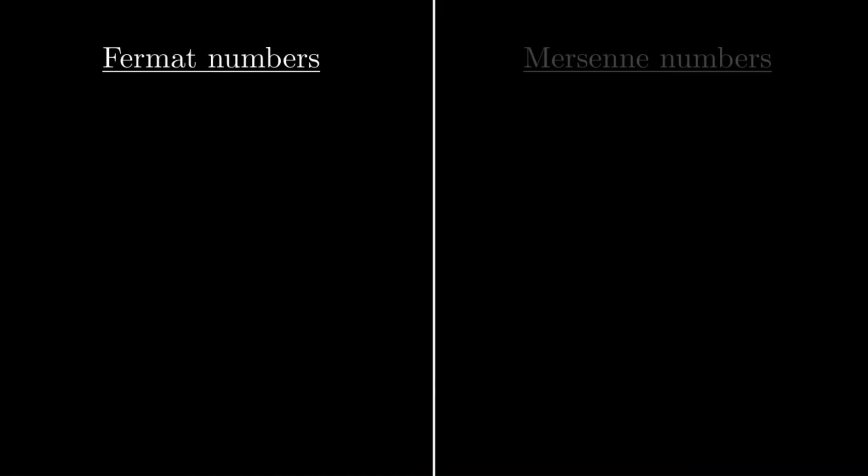So, these big numbers fall into two categories, Fermat numbers and Mersenne numbers. Fermat numbers come about when looking for primes that are 1 more than a power of 2. So if we have a prime that's 1 more than a power of 2, it turns out that the exponent always has to be, itself, a power of 2.